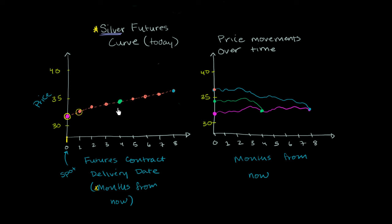If today you were to agree to buy or sell silver eight months from now and you were to lock in the price, you would lock in a price that looks like about $36 an ounce.